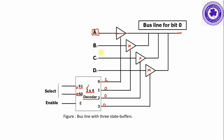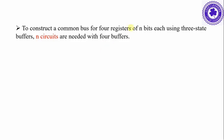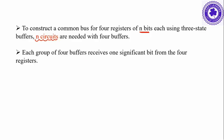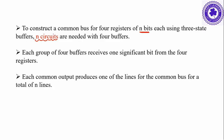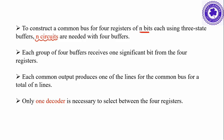To construct an n-line common bus, the same circuit is repeated n times. To construct a common bus for four registers of n bits each using three-state bus buffers requires n circuits; each group of four buffers handles one significant bit from the four registers, and each common output produces one of the n lines of the common bus. Only one decoder is necessary to select between the four registers. Hope you have understood clearly — if you like the video please like, share, and subscribe.